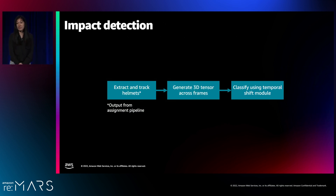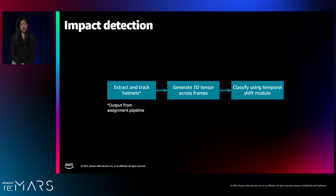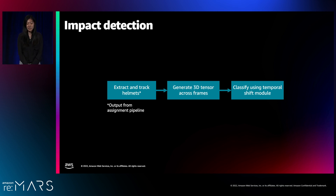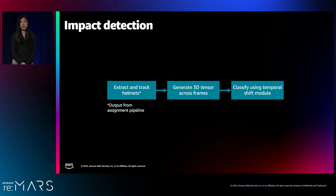After we've identified the helmet bounding box as well as the player assignment, the next step is to detect if a player has an impact at any given moment during the play. We follow a three-step approach: first, we take the output from the assignment pipeline that Rob just presented. After that, we generate 3D tensors across all the frames — those are our feature clips. After that, we feed that into our impact detection classification model, which tells us if a player has had any impact at any time during the particular play.